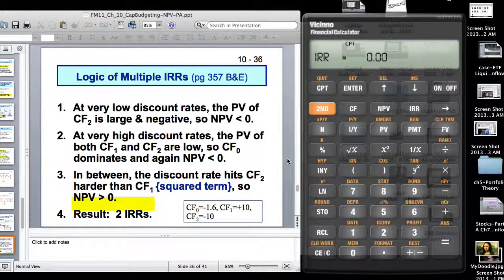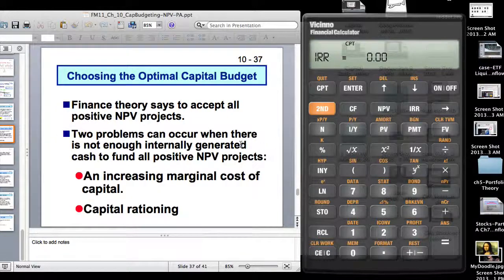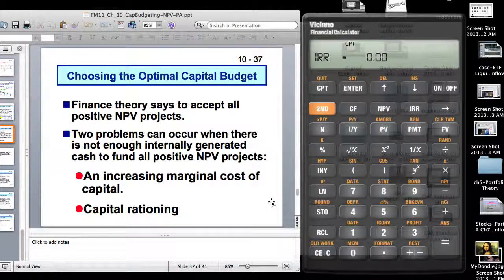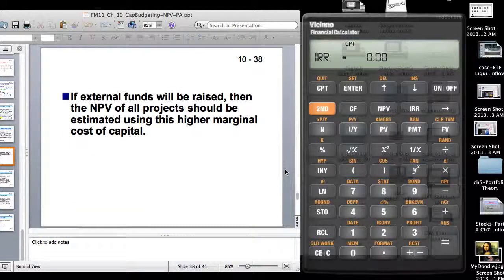Logic of multiple IRRs, this is something in the book page 357, you can look at it. It's basically similar to timing and scale issues. Choosing the optimal capital budget, finance theory says to accept all positive NPV projects. But there are two problems that can occur when there is not enough internally generated cash to fund all positive NPV projects. One is an increasing marginal cost of capital and then capital rationing. I think from an individual to a corporation to a nation, there is a capital budgeting problem.